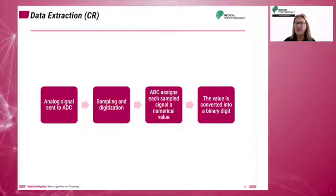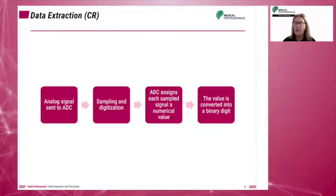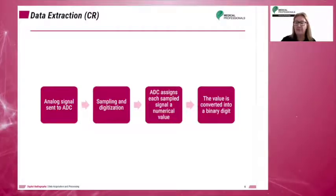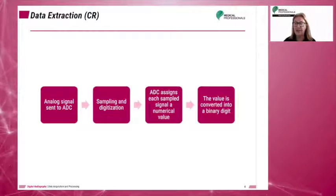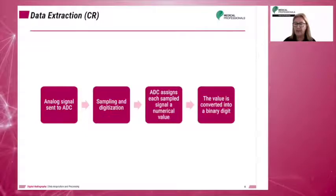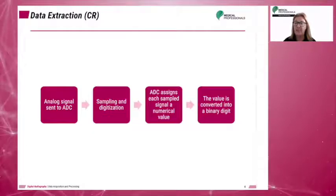Tissues that highly attenuate the beam — for example, bone — will be displayed with higher brightness on the display monitor. Tissues that demonstrate lower attenuation characteristics will be assigned a higher numerical value and will appear with less brightness or darker on the display monitor.